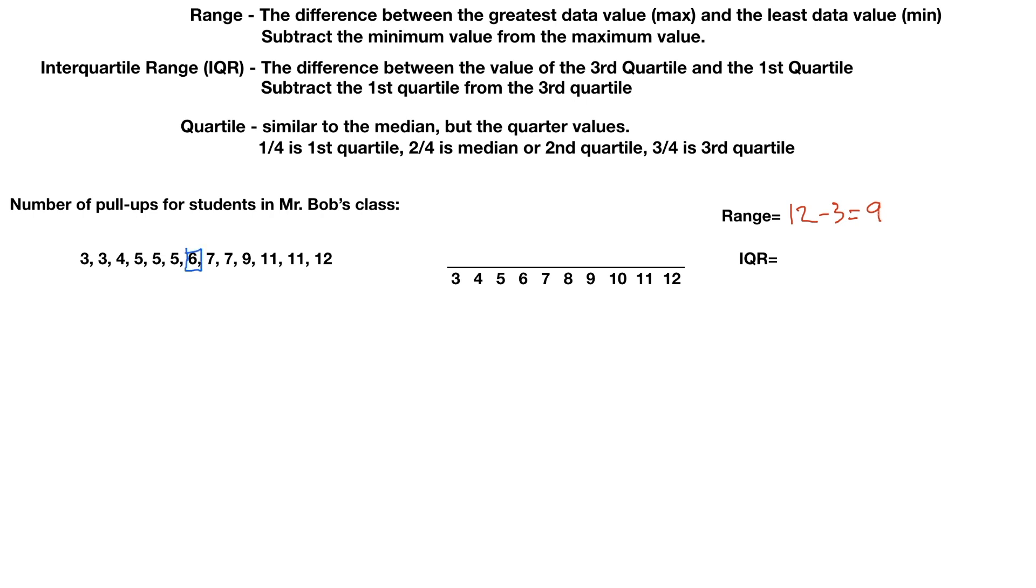And then to find the quartiles, again, we're just going to see basically from these numbers and then from these numbers, what are the middle? So if you have an odd number, you're not going to include the median in that. And so the four and the five, so that's 4.5 halfway in between. And then the median on this side, it's going to be between nine and 11. And so that's going to be 10 right there. So that's our first quartile, that is our third quartile. So the interquartile range would be just subtracting those. So we would have 10 minus 4.5 equals 5.5. So we have a range of nine and interquartile range of 5.5.